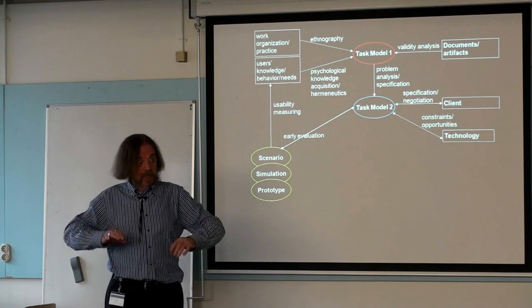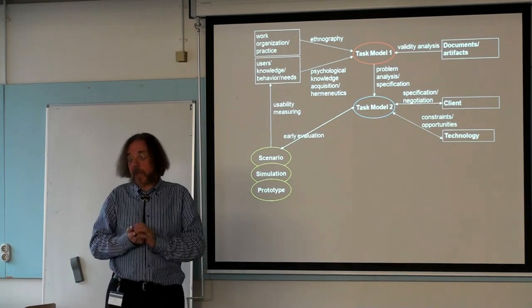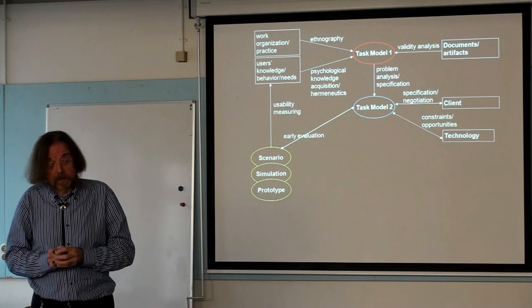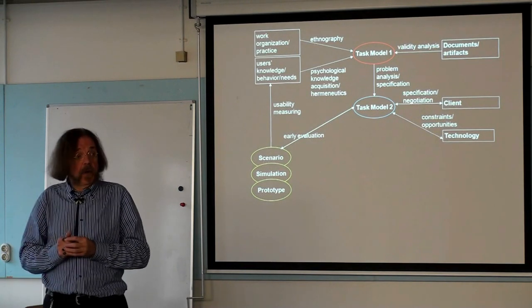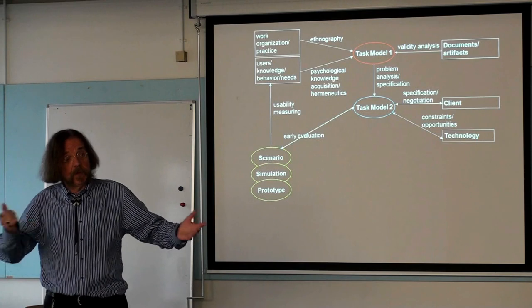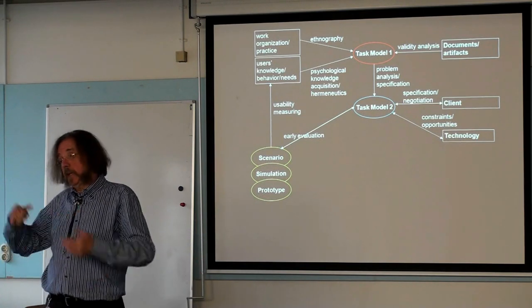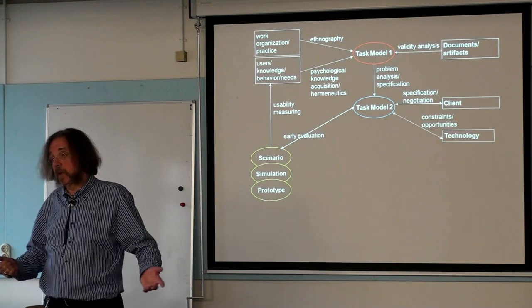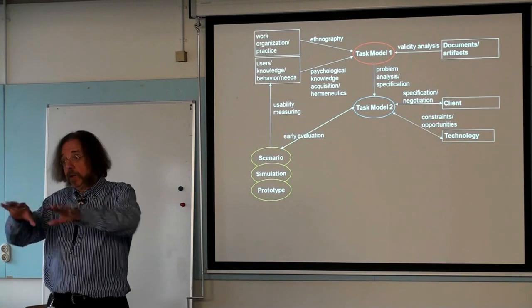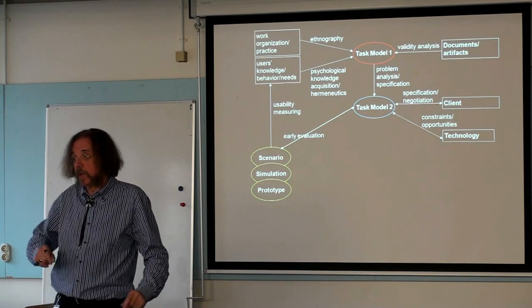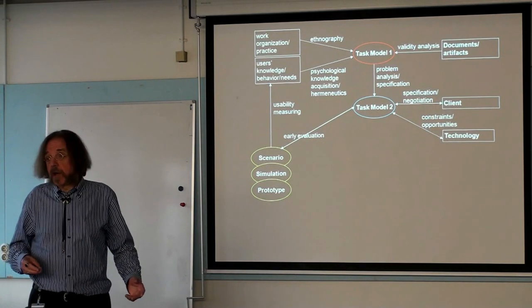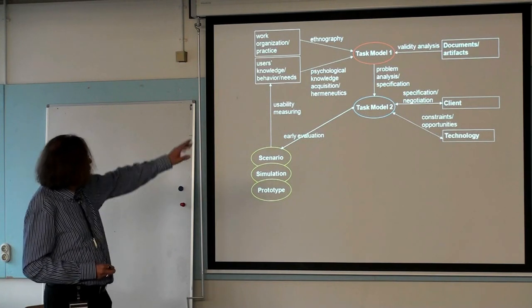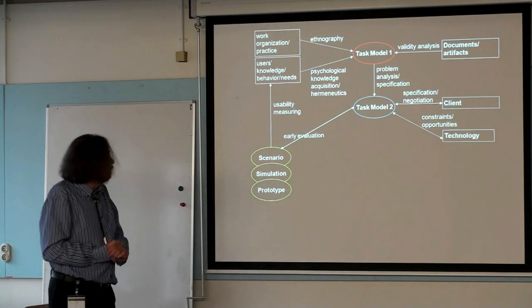A model of an existing situation that people can talk about. Maybe even the customers of the client could talk about it, or potential customers of the client. If your client is about automotive, there might be other people you happen to know who ride cars and are passionate about it. If the client is about a new system for televisions, you might know people who are fond of their television set. So you could find potential customers to talk about it, because cars and televisions are not new. There are artifacts and documents, and you could find them, and develop a task model 1.